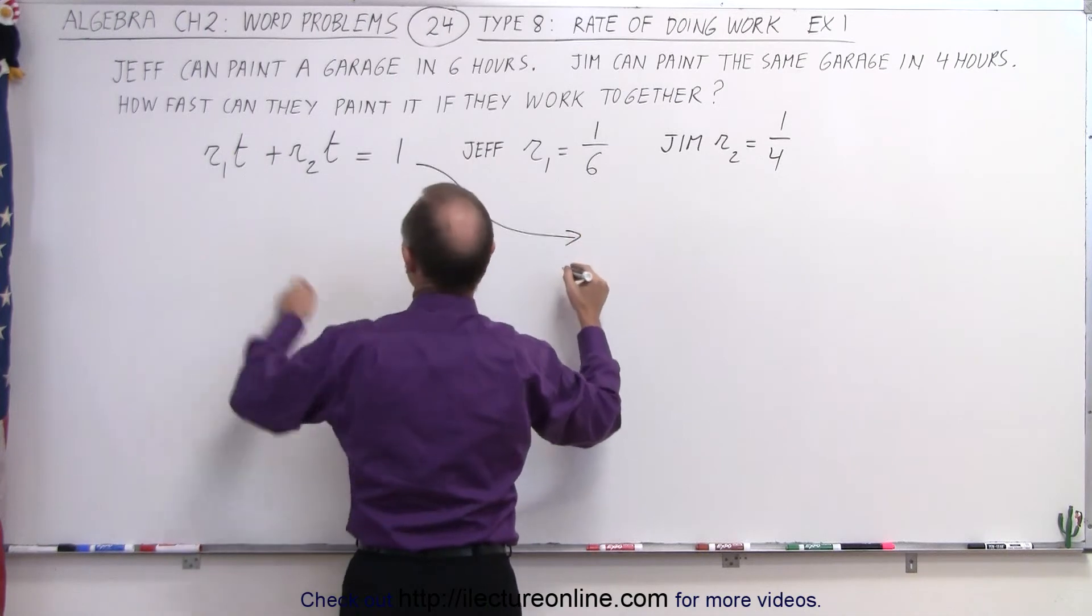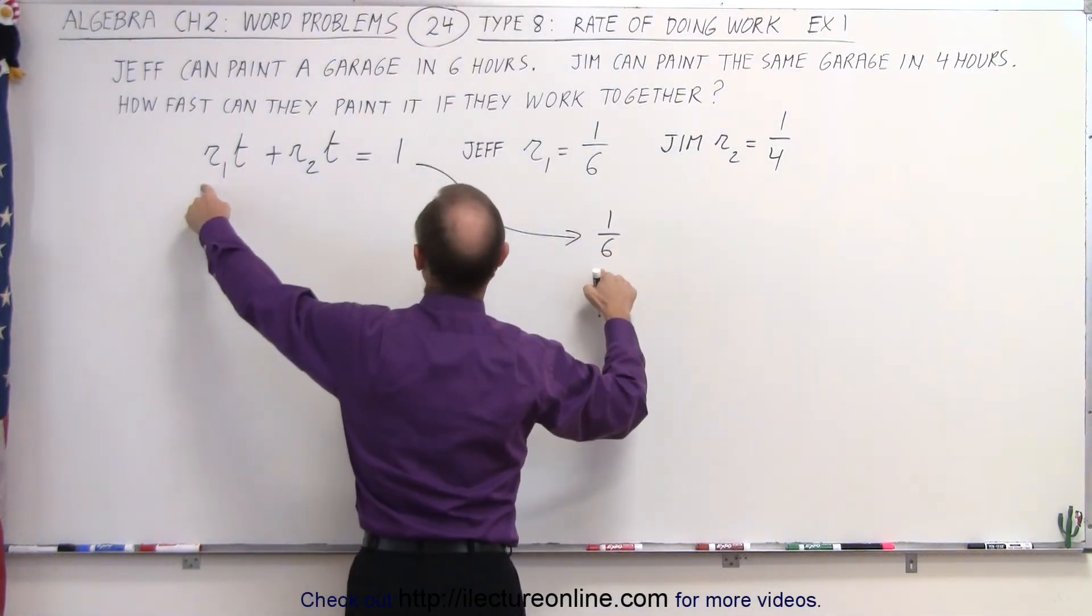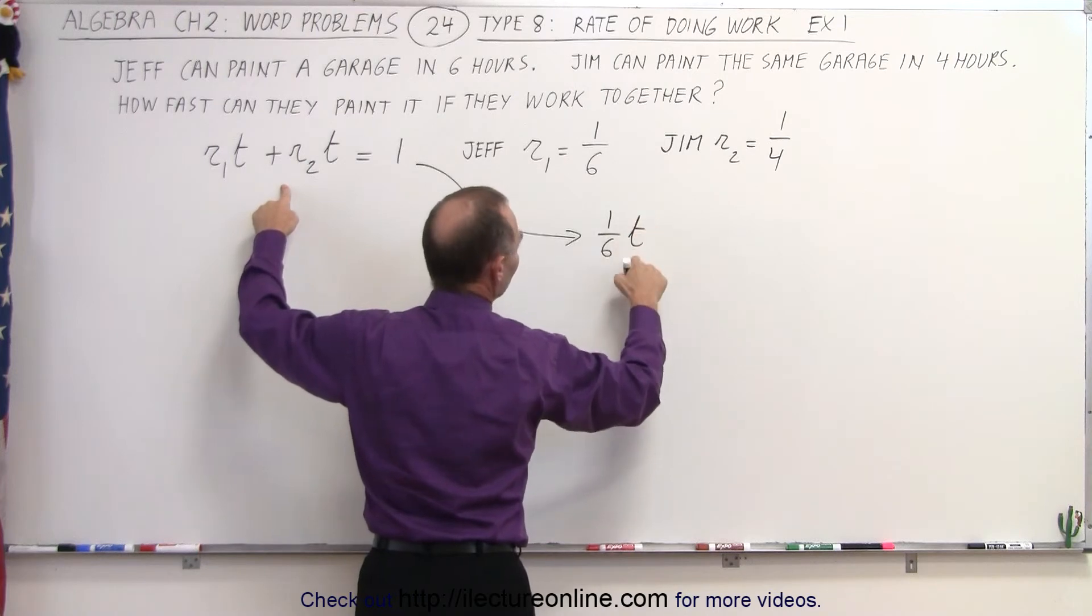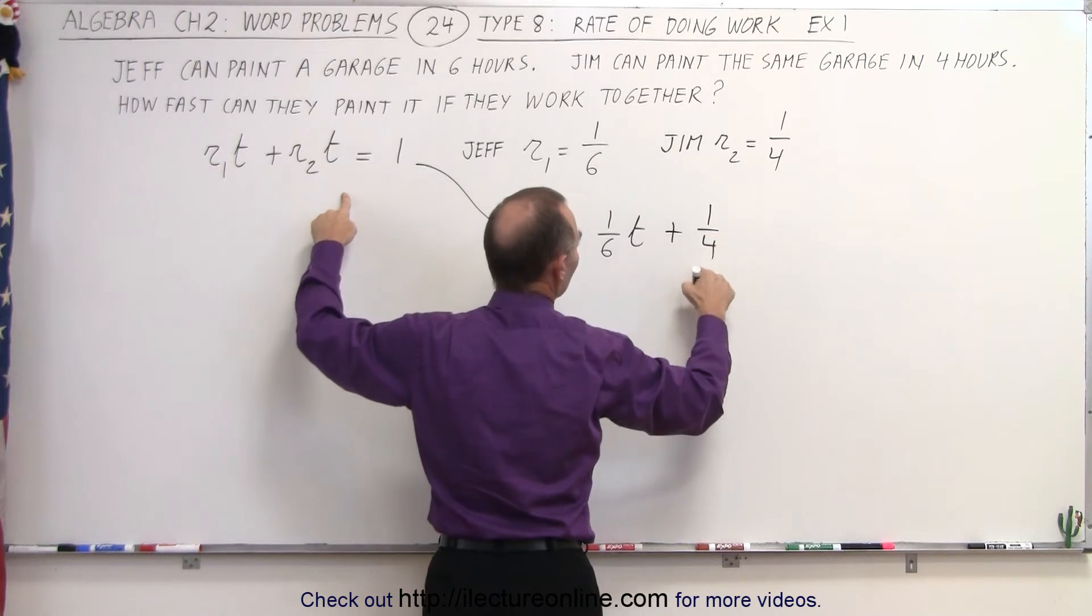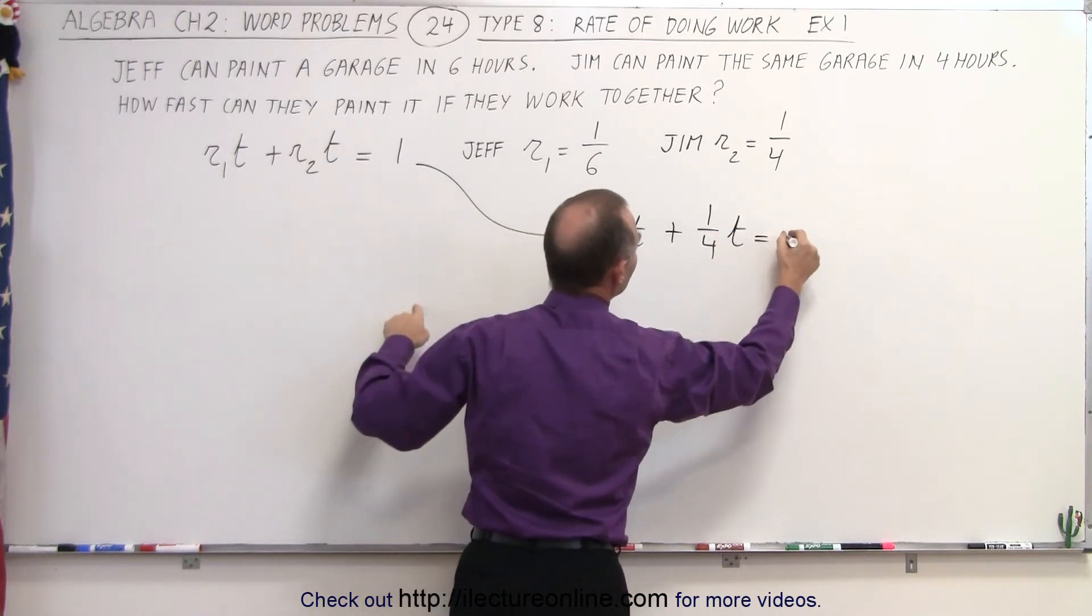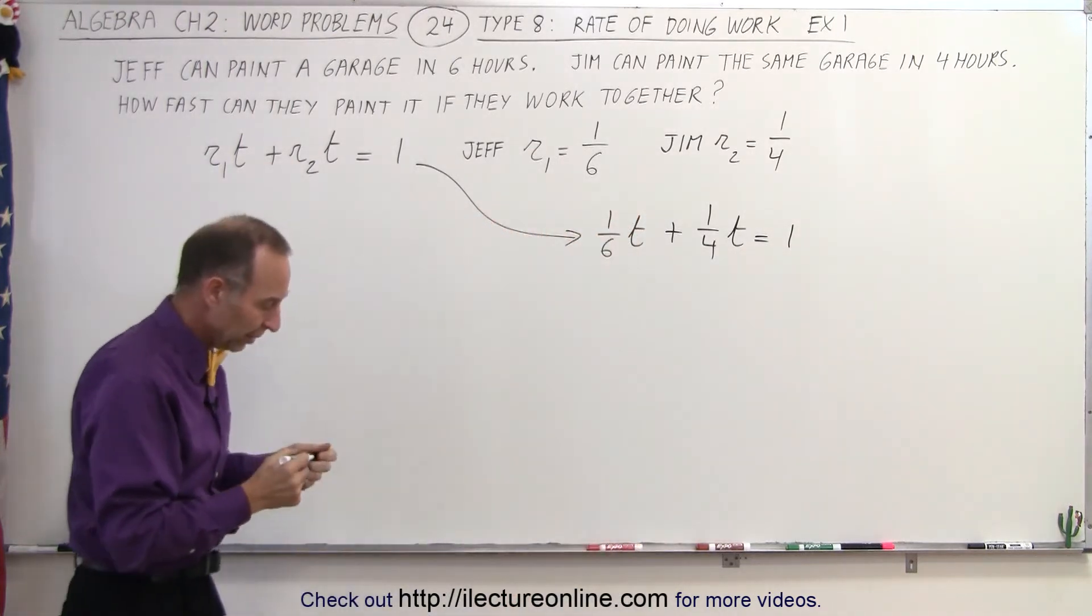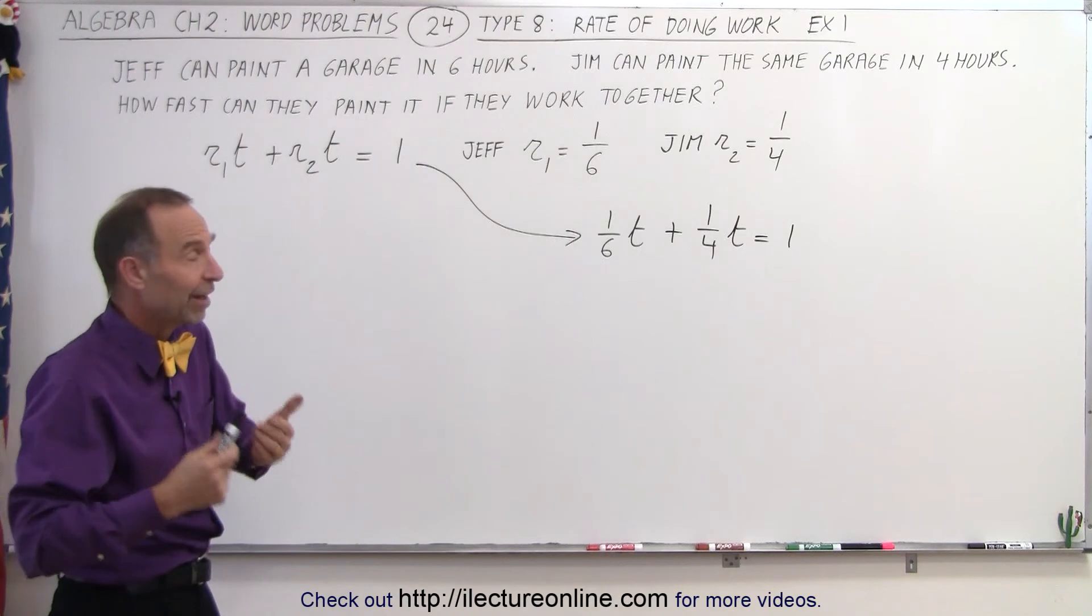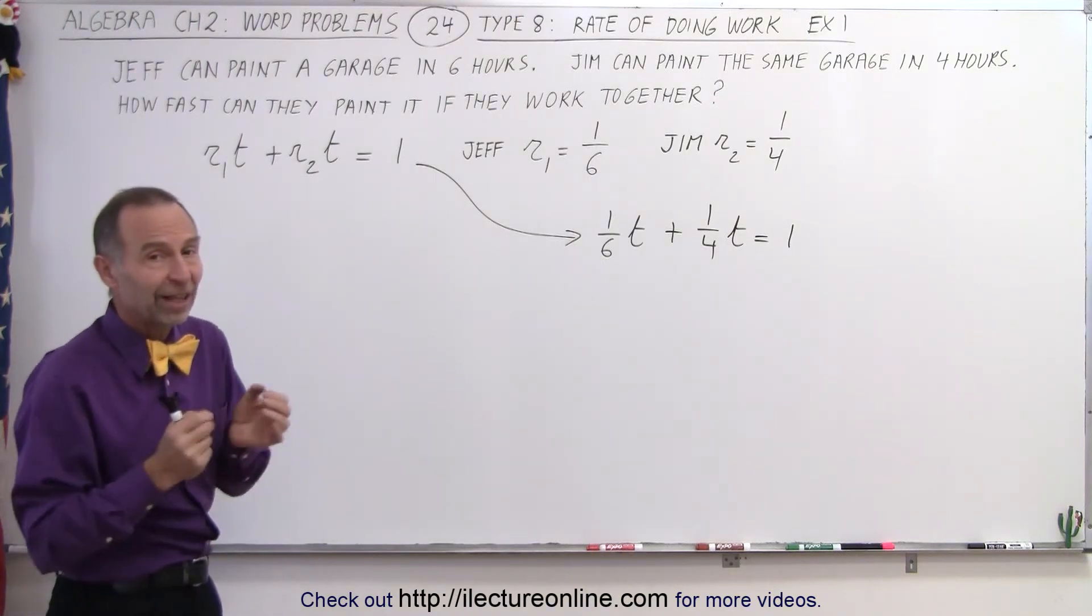So our equation now becomes the rate of Jeff, which is one sixth of a garage every hour times the number of hours that they paint together, plus the rate of Jim, which is one fourth of a garage every hour times the number of hours that they paint together. And that will then equal the whole job done. The full garage will be painted. All we need to find now is the correct value for t, how long it will take for both of them to paint.